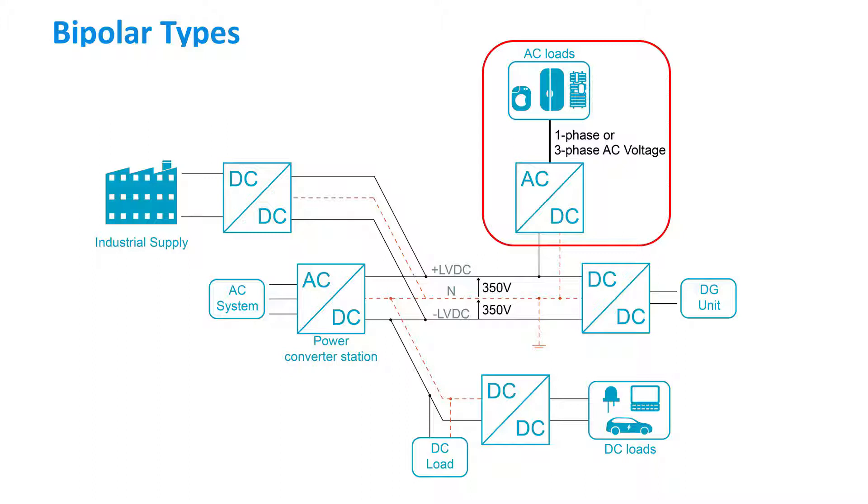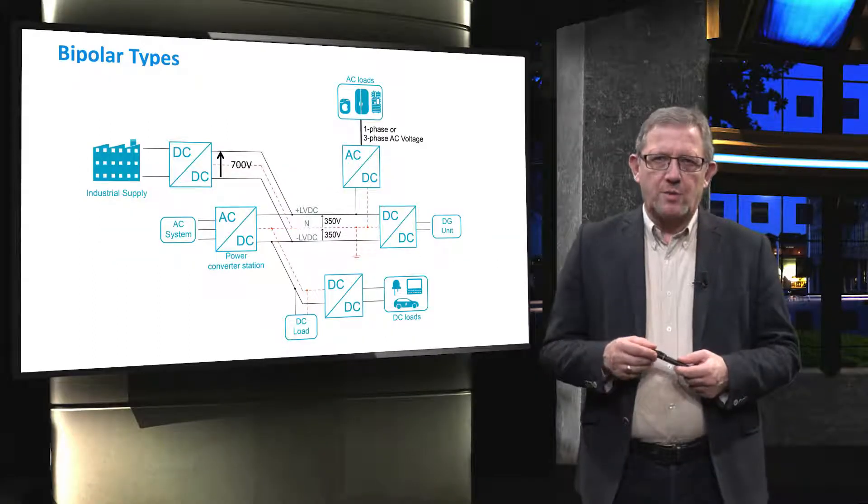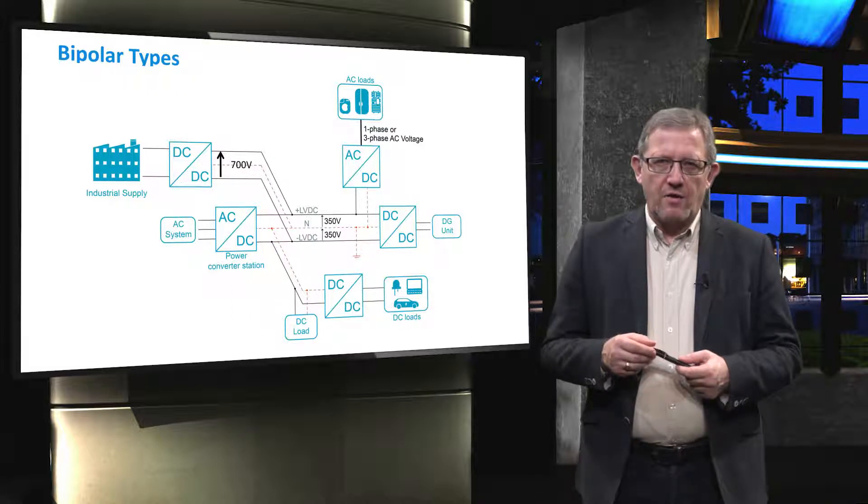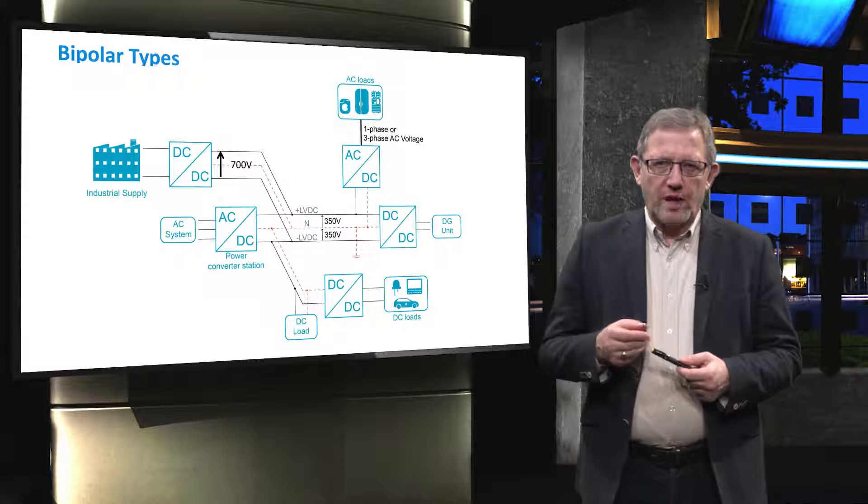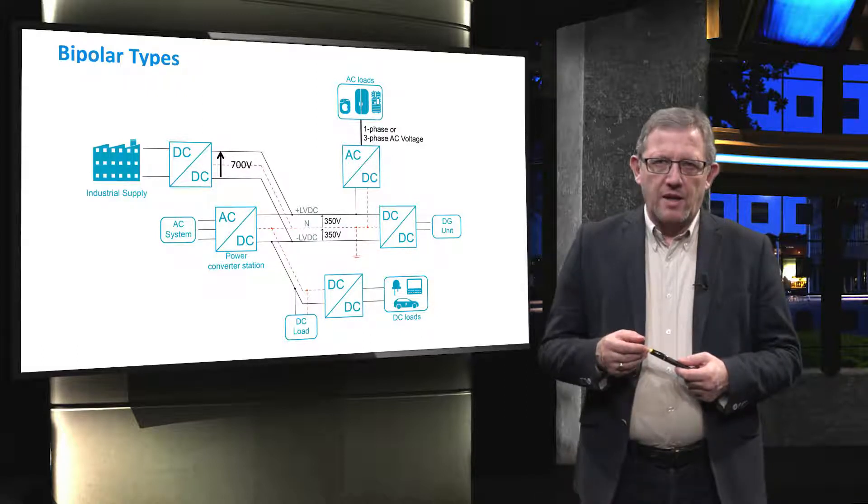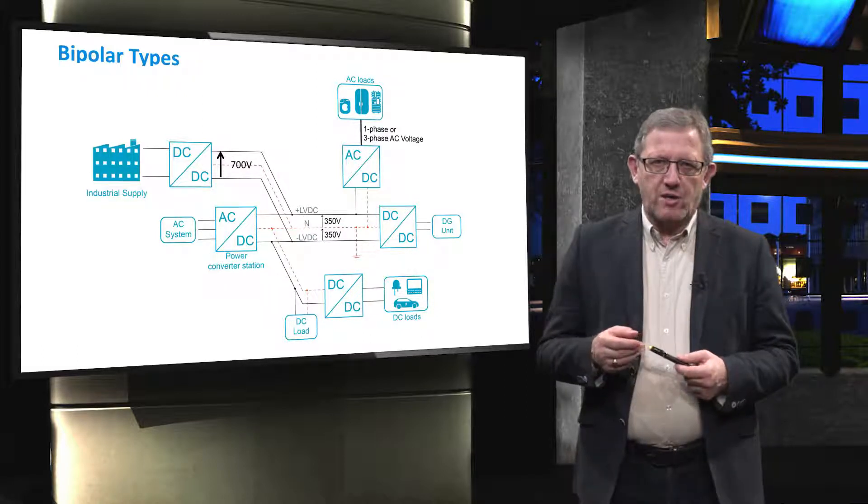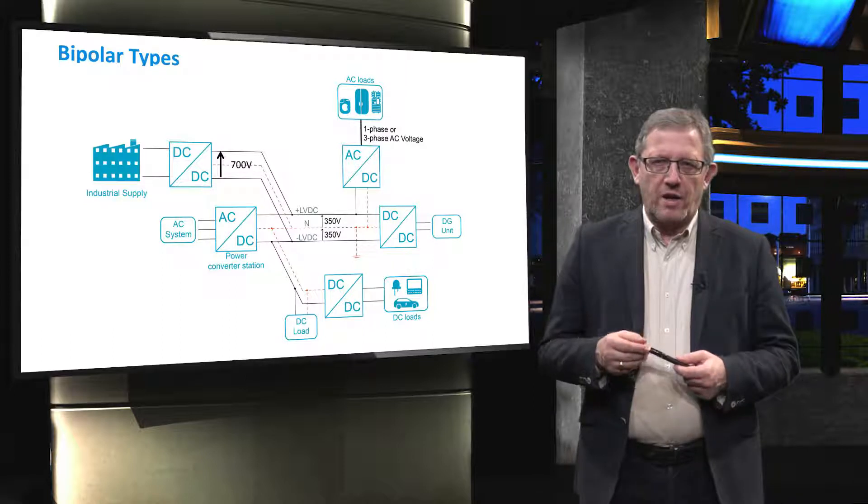The advantages of bipolar type are that isolation is not highly needed for the cables. In fact, if the two cables are balanced, theoretically there is no current passing from the neutral cable. Also, it is possible to get 700 volt for industrial supply which requires higher voltage and connect to the same line some smaller loads such as cars or AC loads that require only 350 volt. So both voltages are possible.